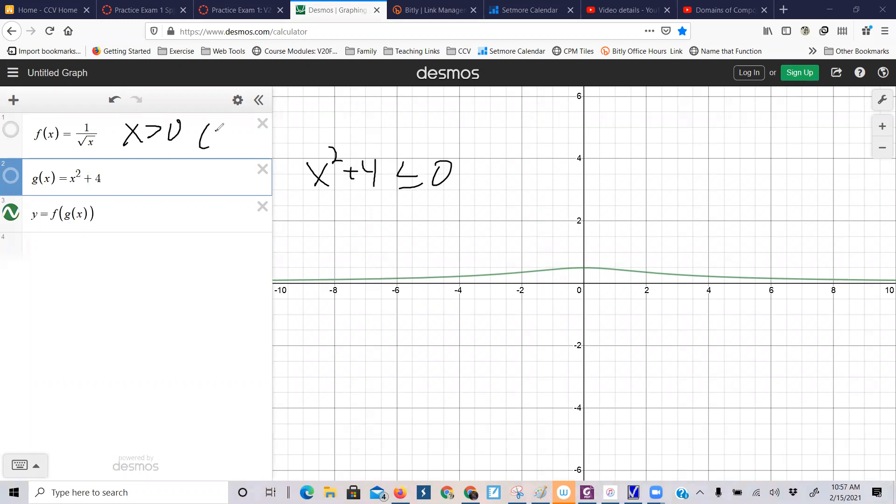right, or open at zero to infinity, if I want to do interval notation. So let's solve this equation, where does x squared plus four equal zero? Well, x squared equals negative four, and I know I can't take the square root of a negative number, so it's never equal to zero,